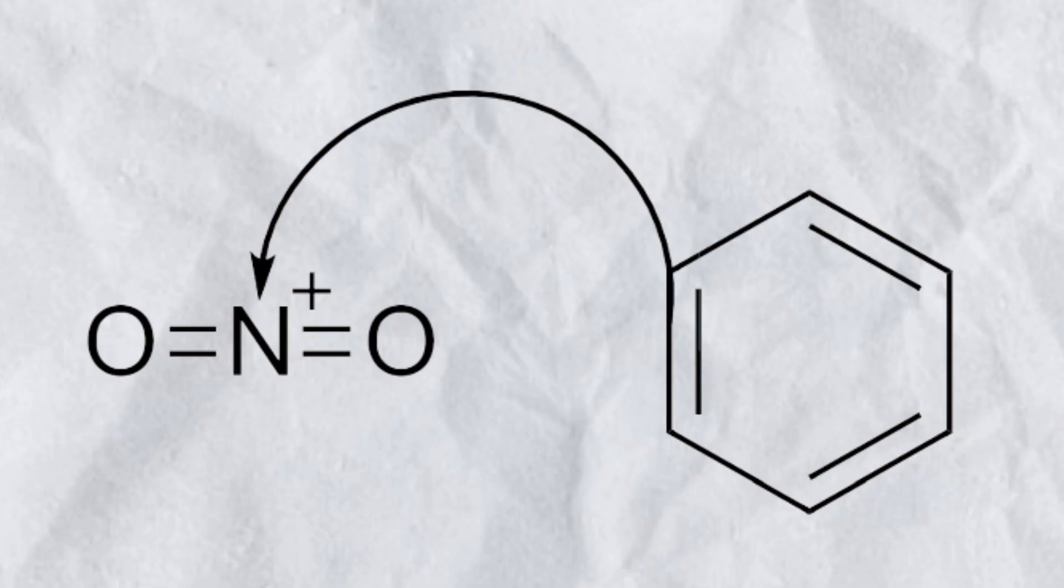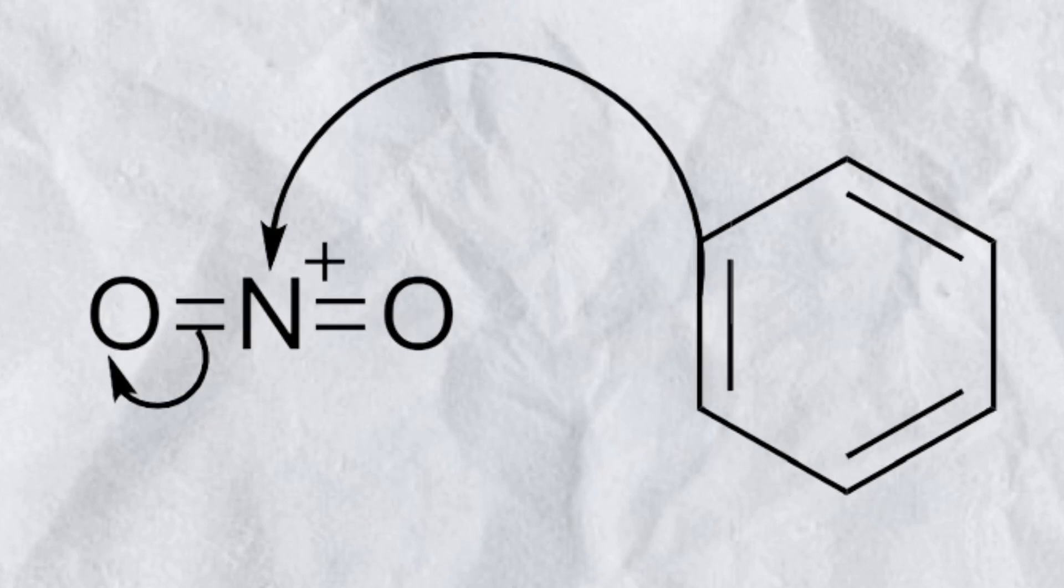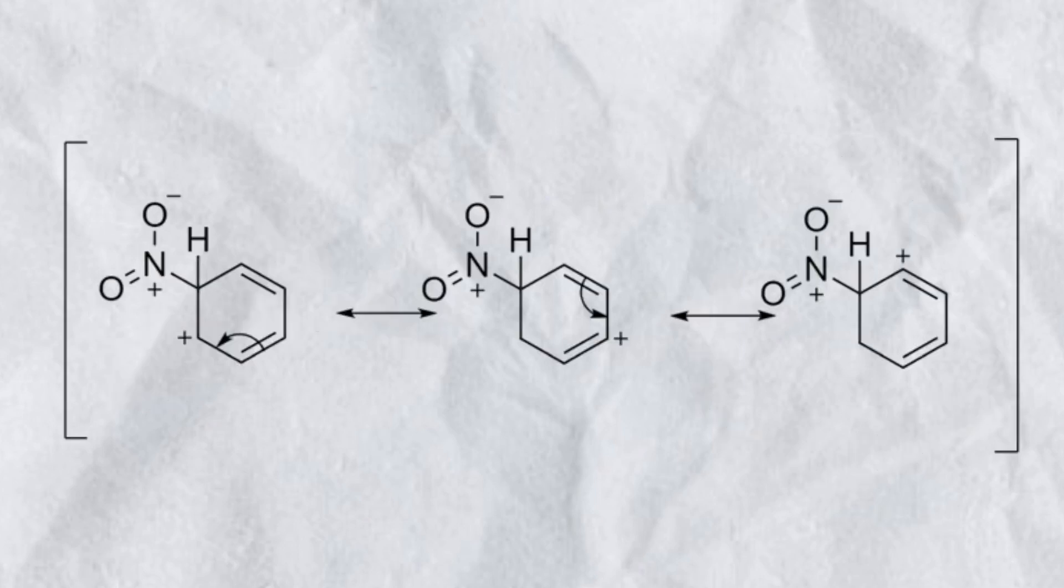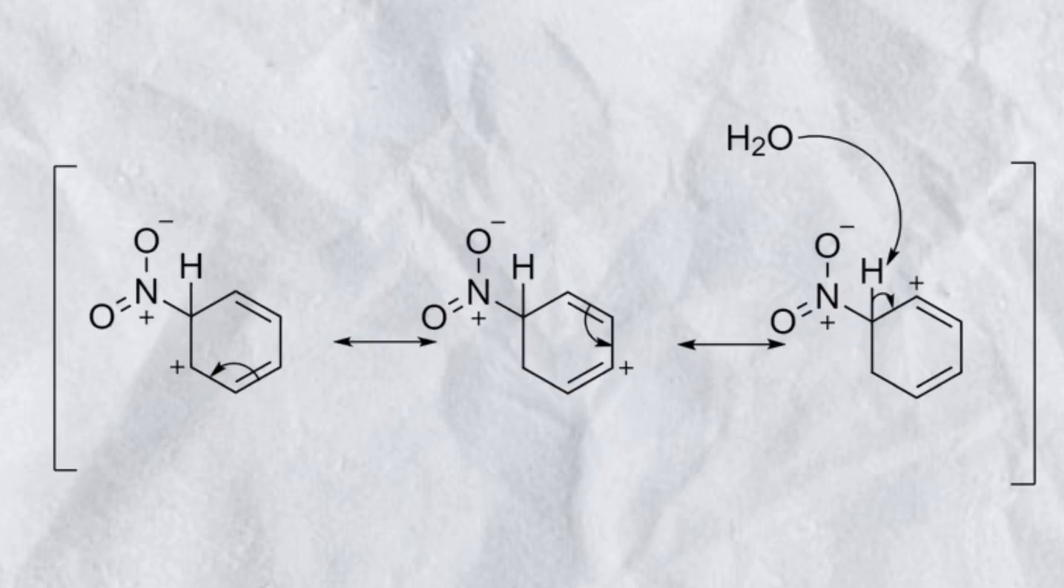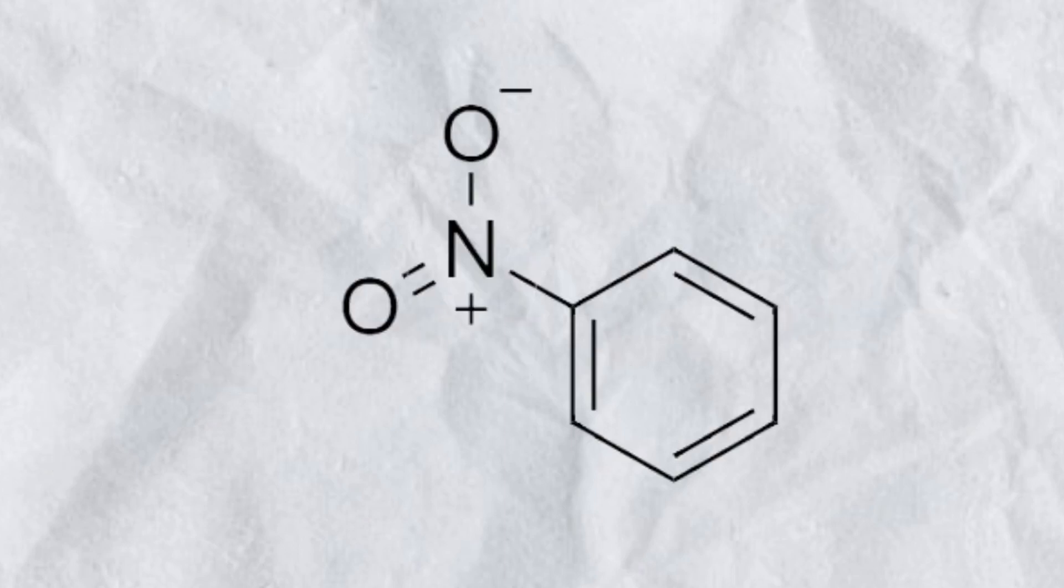As the benzene is being added, a pi bond from the benzene attacks the positive nitrogen which then pushes the nitronium ion's pi electrons back to the oxygen. This then forms the arenium ion. Water then picks up the acidic hydrogen and the electrons are now free to form a double bond. This forms the nitrobenzene.